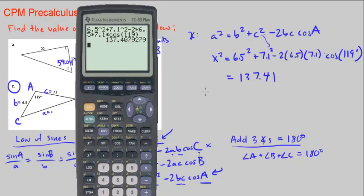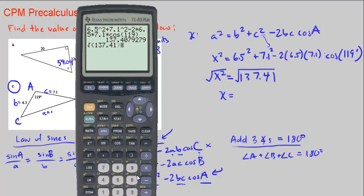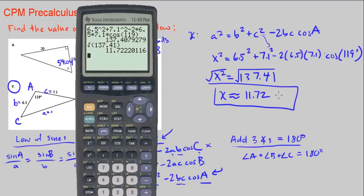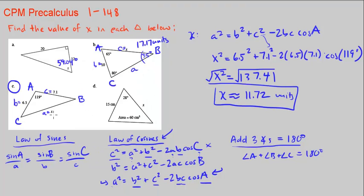But I'm not done yet because that equals x². To solve for x I need to square root both sides. It's plus or minus since we had x squared, but since we're looking at side lengths of actual triangles, we only use the positive value. So x = √137.41 ≈ 11.72 units.